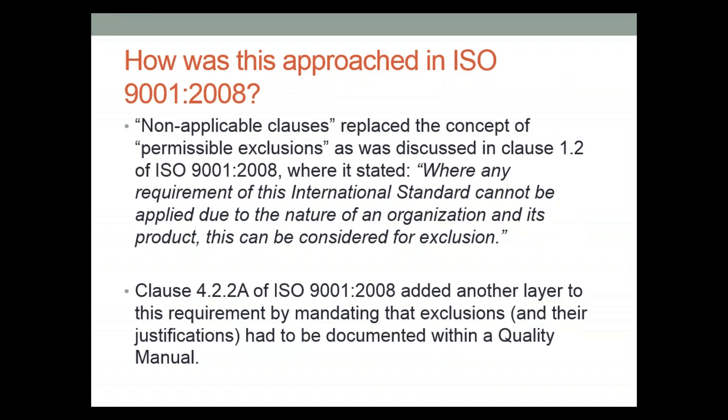Under ISO 9001-2008, this concept was referred to as permissible exclusions, written into Section 1.2, which stated that if any requirement cannot be applied, it can be considered for exclusion. ISO 9001-2008 also required that permissible exclusions be specifically included within the quality manual. Of course, ISO 9001-2015 does not have a quality manual requirement.